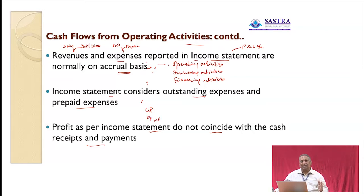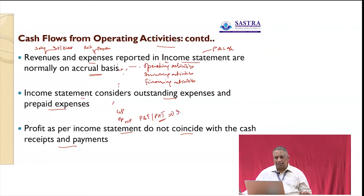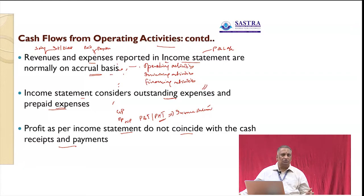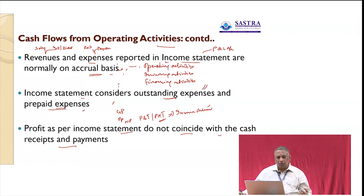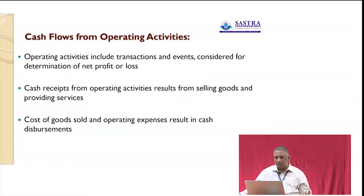Profit may be classified at different levels — gross profit, profit before tax, or profit after tax — all of which can be found in the income statement. The income statement is prepared on an accrual basis, meaning outstanding expenses are added and prepaid expenses are reduced. As a result, the result of the income statement will not normally coincide with cash receipts and cash balances.